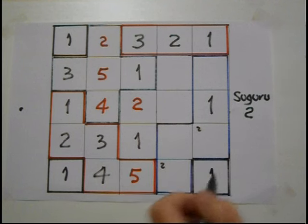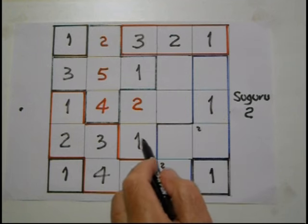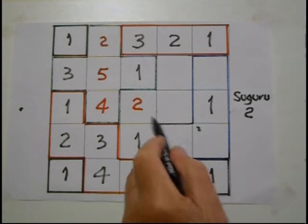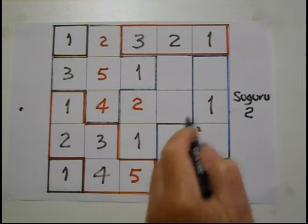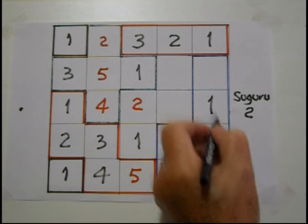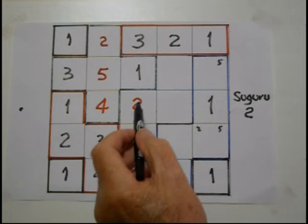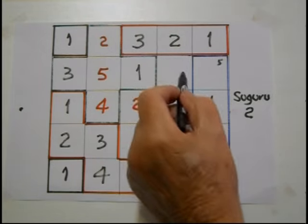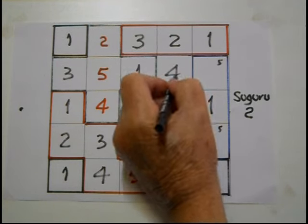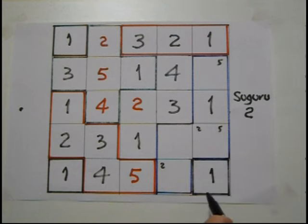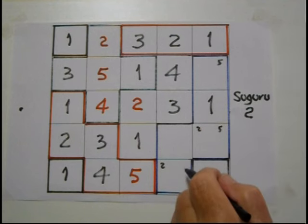That one's got a 2; can't be a 2, can't be a 2 — so it's 2 or 2 there. Can't be a 5 so that's got to be a 5 up there. We have 1, 2, 3, 4 — can't be a 3 so it's got to be a 3 there. And if that's a 3 then that's got to be a 4. If that's a 4 then these can be a 4.